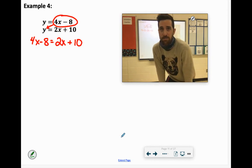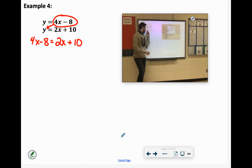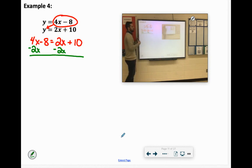Get the variables together. We can get rid of 4x, sure, but I'm going to get rid of 2x. The opposite of 2x is negative 2x. So we're going to subtract 2x over here and subtract 2x over here. 4x minus 2x is 2x, minus 8. These cancel out, you got a 10 over here.